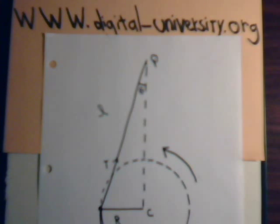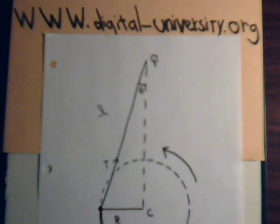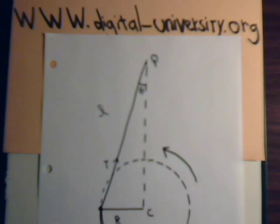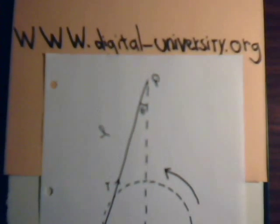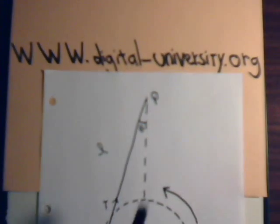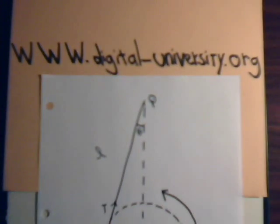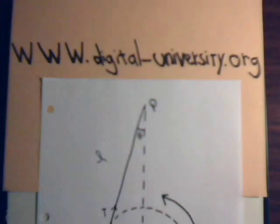In videos number 26 and 27 in our analytical mechanics series, we've been discussing the conical pendulum, and specifically we've been considering the angular momentum of the system. The angular momentum, of course, has to be taken with respect to certain points. A reminder that the playlist for all the videos is at digital-university.org.